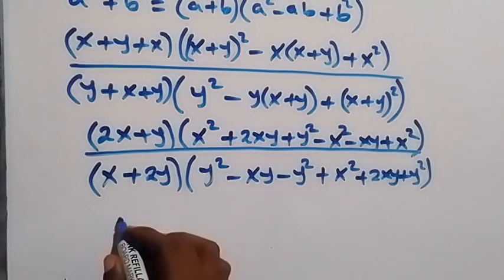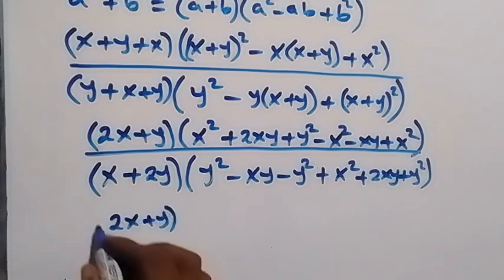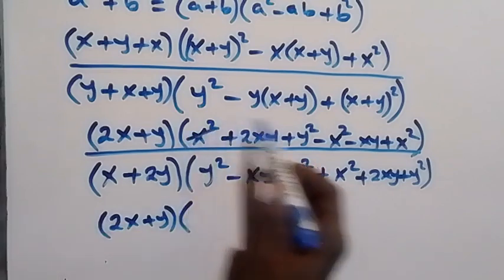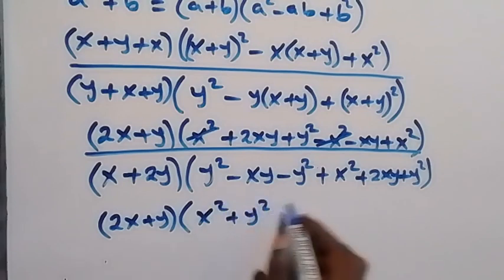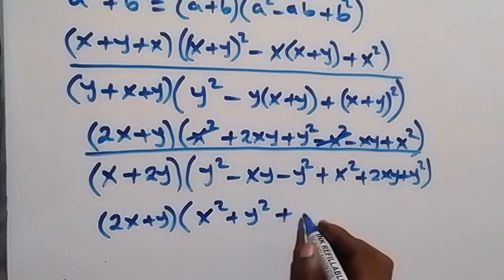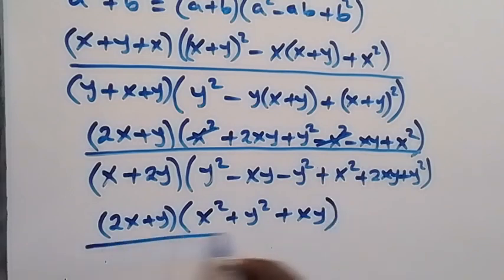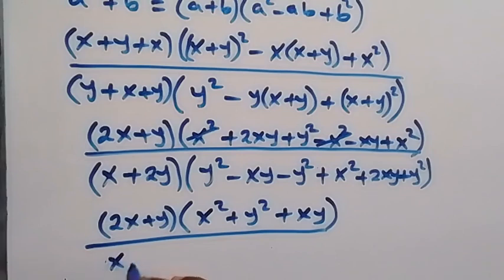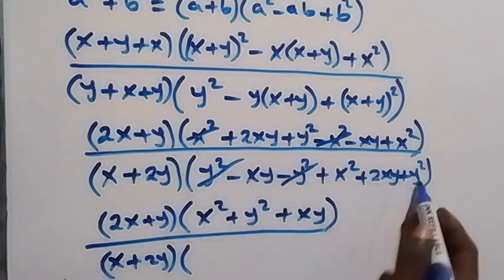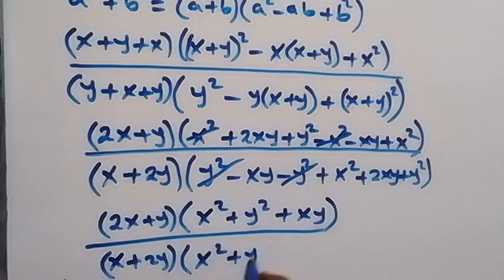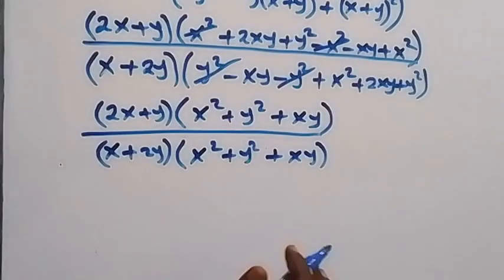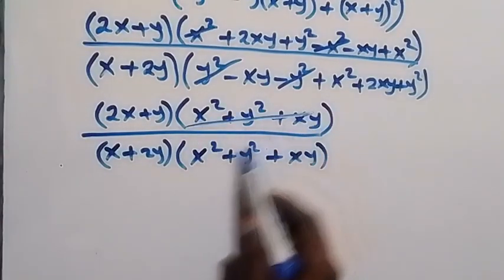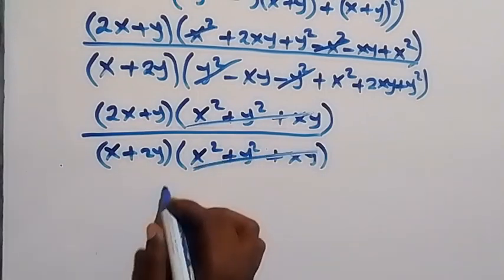Simplifying the numerator bracket: the x² terms cancel out, leaving x² plus y² plus xy. This gives us (2x plus y) into bracket (x² plus y² plus xy). Similarly in the denominator, the y² terms cancel, leaving (x plus 2y) into bracket (x² plus y² plus xy). The common bracket (x² plus y² plus xy) cancels from numerator and denominator, leaving (2x plus y) over (x plus 2y).